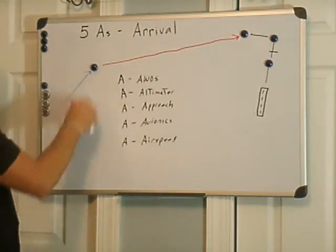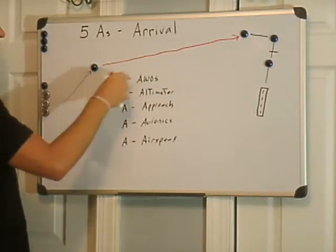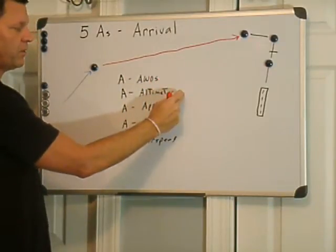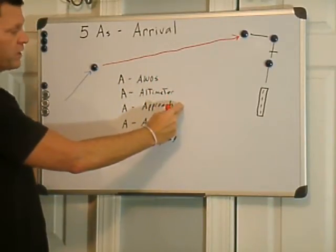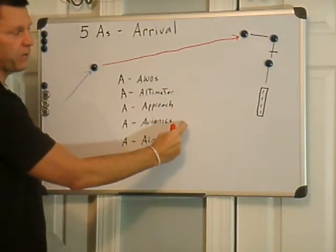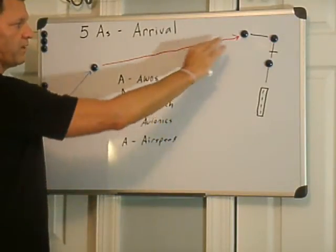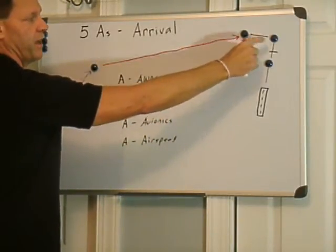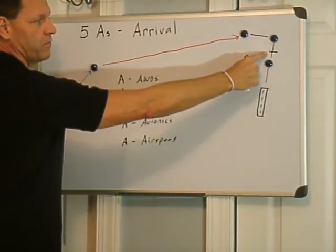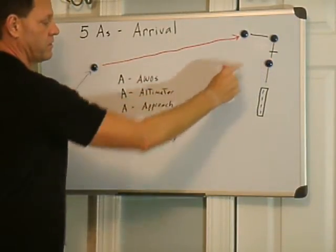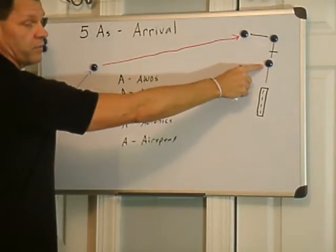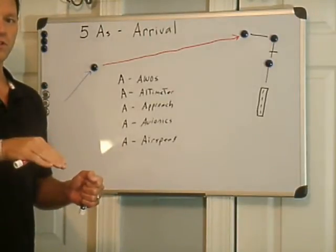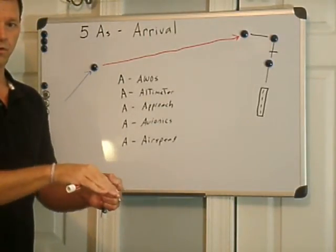So here we are, we reach the arrival fix transition, check our AWOS, ASOS, ATIS, etc. Update the altimeter, select the approach, confirm this with air traffic control, configure the avionics, perform whatever checklists we need to perform, initial descent before you ever reach the initial approach fix, and then final, a couple of miles outside the final approach fix, and then make sure that when we cross the final approach fix, we're configured for the right airspeed for a normal descent and stabilized descent to the missed approach point and landing.